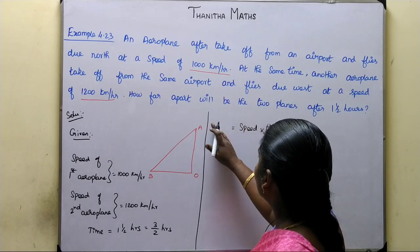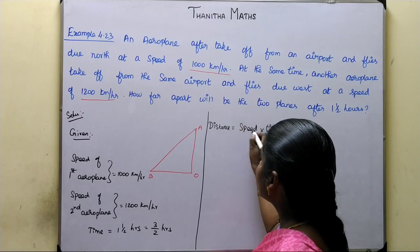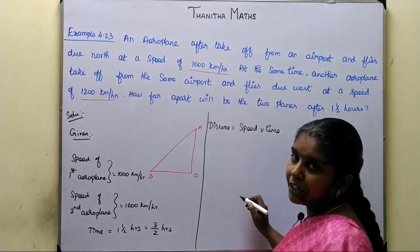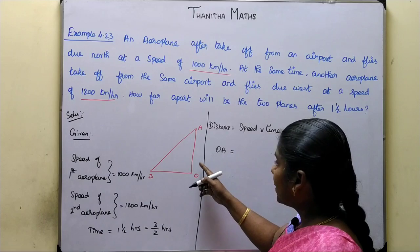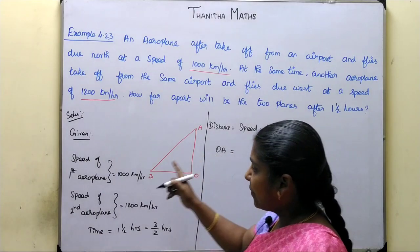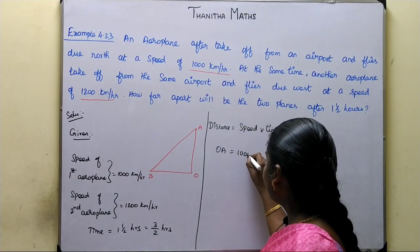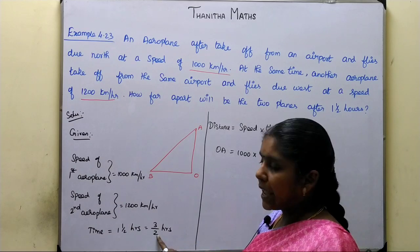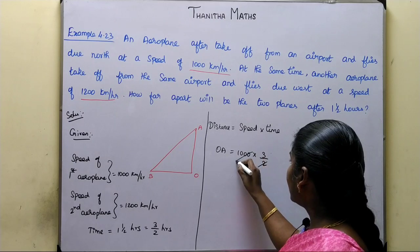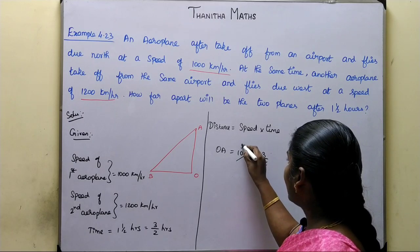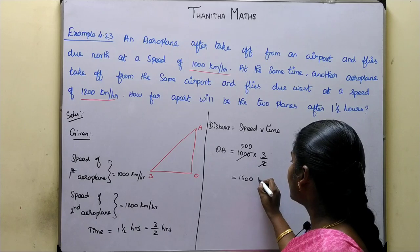Distance is equal to speed into time. OA distance — first airplane speed is 1000, into time which is 3 by 2. So, 1000 into 3 by 2 — cancel, parameter gives 500, so OA is 1500 km.